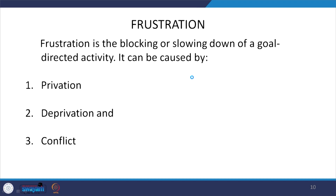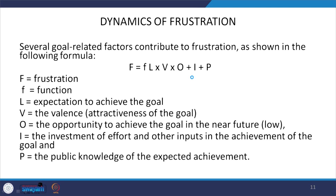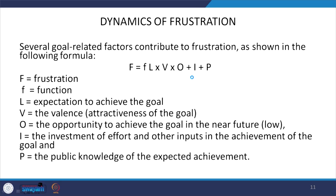Frustration is the blocking or slowing down of a goal-directed activity. It can be caused by privation, deprivation, and conflict. Frustration is a negative emotion and causes a negative effect. Several goal-related factors contribute to frustration, as expressed in the formula: Frustration (F) = f(L × V × O + I + P), where f represents the function of expectations to achieve the goal.